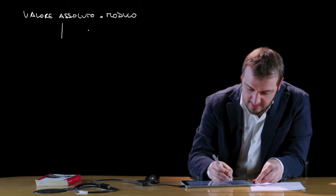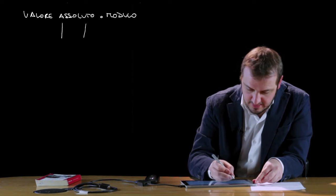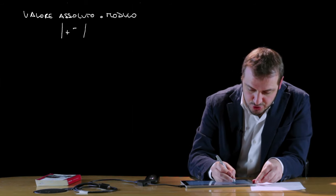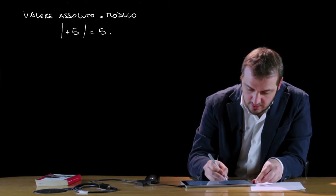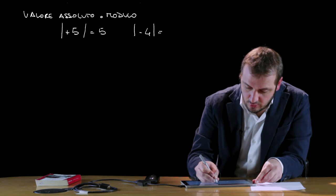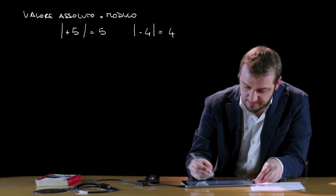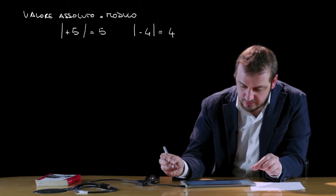Il modulo, che si indica in matematica con due barrette verticali, di 5 corrisponde a 5. Il modulo, invece, di meno 4 corrisponde all'opposto, sostanzialmente, di meno 4, ossia a 4.